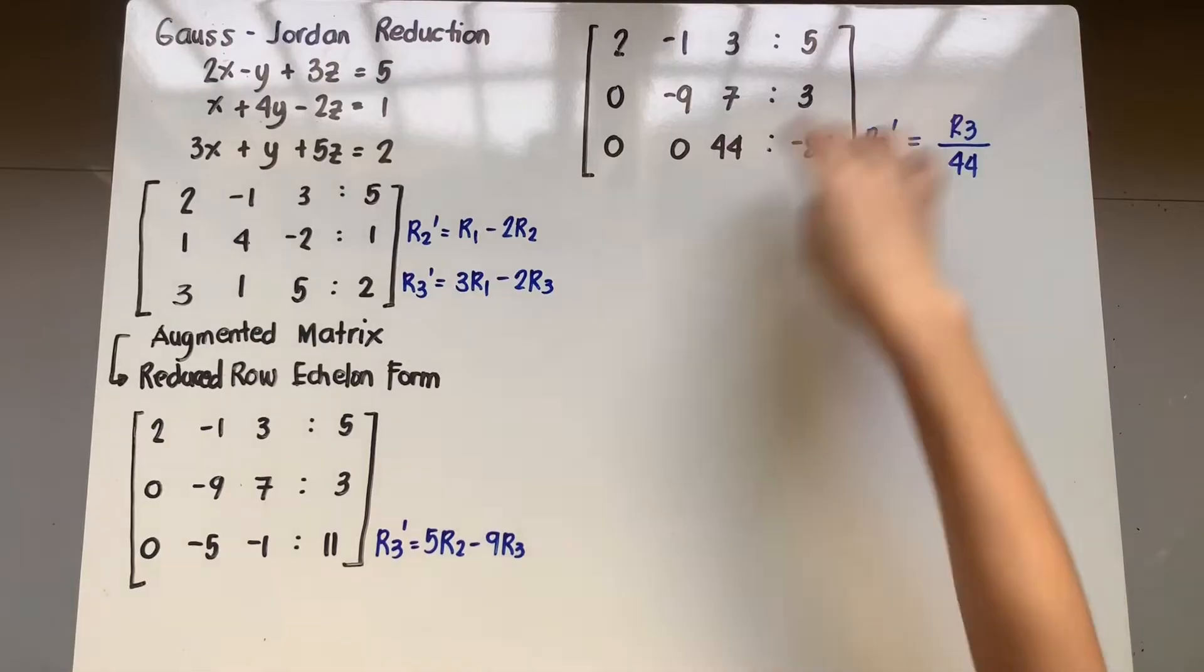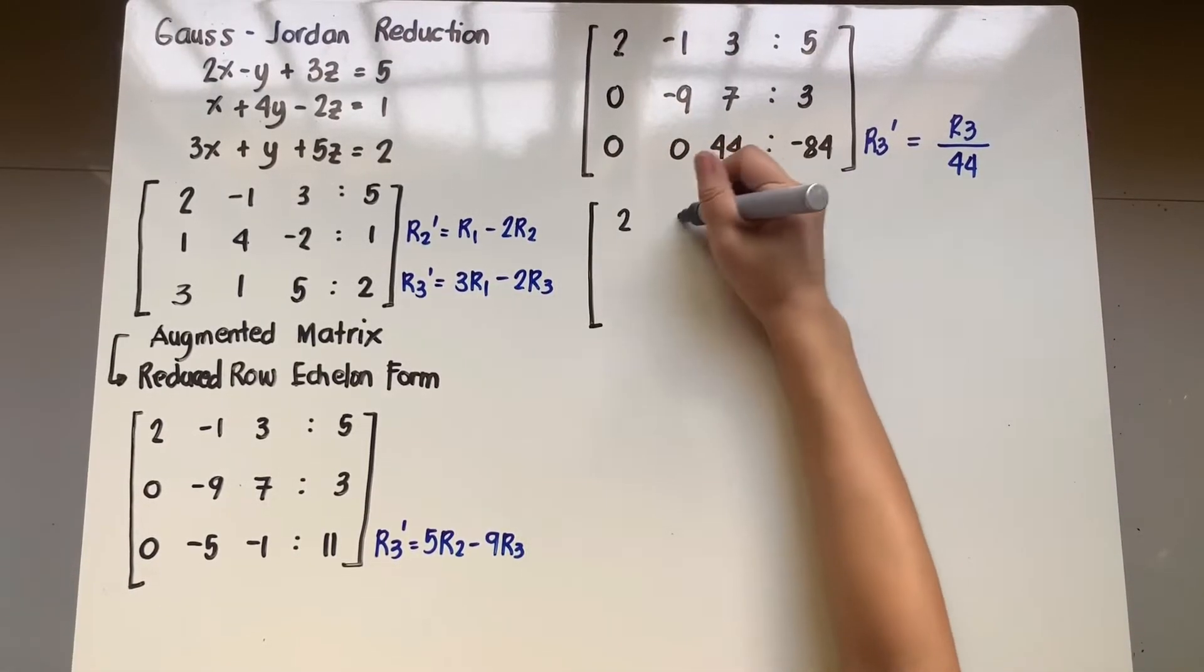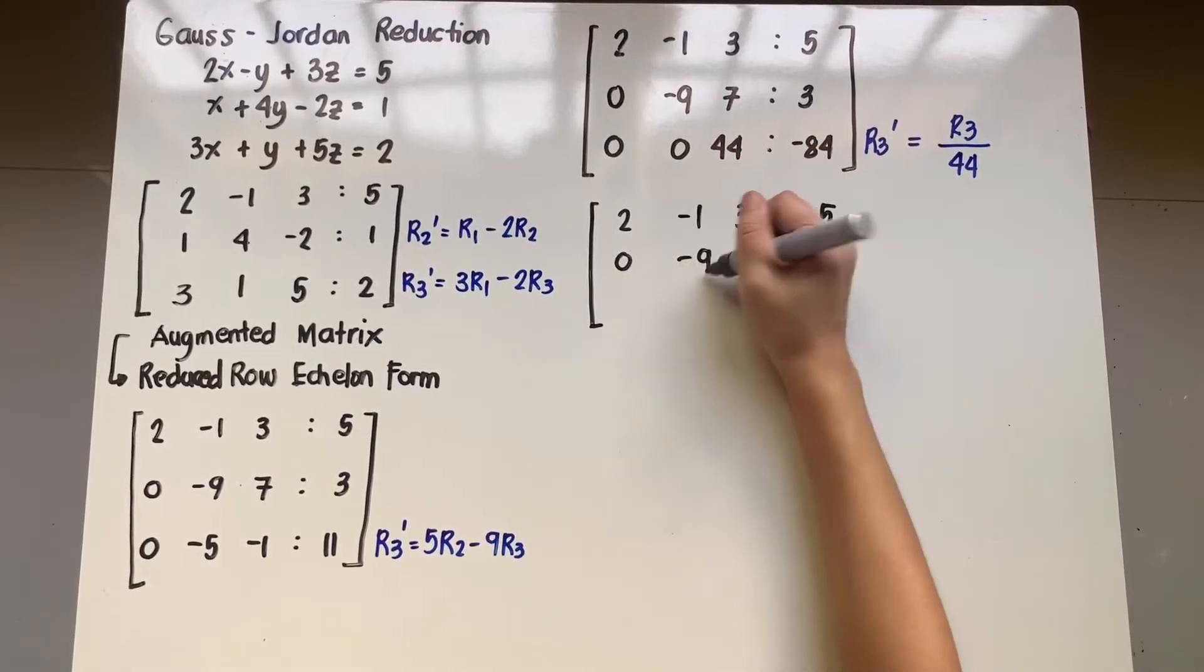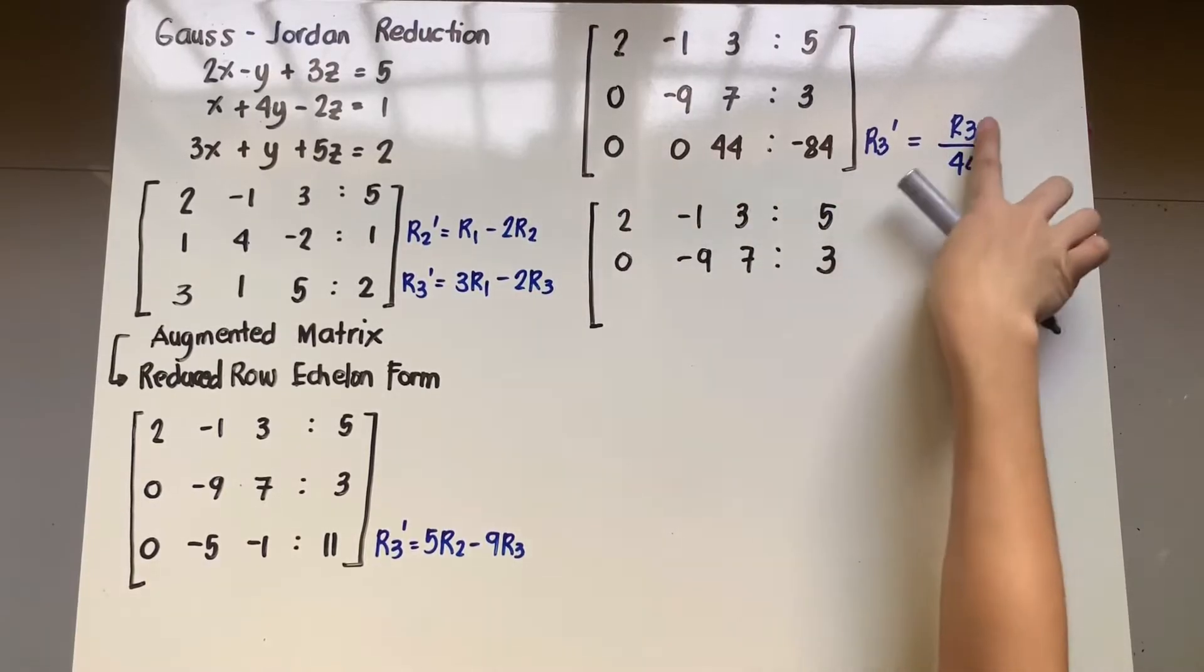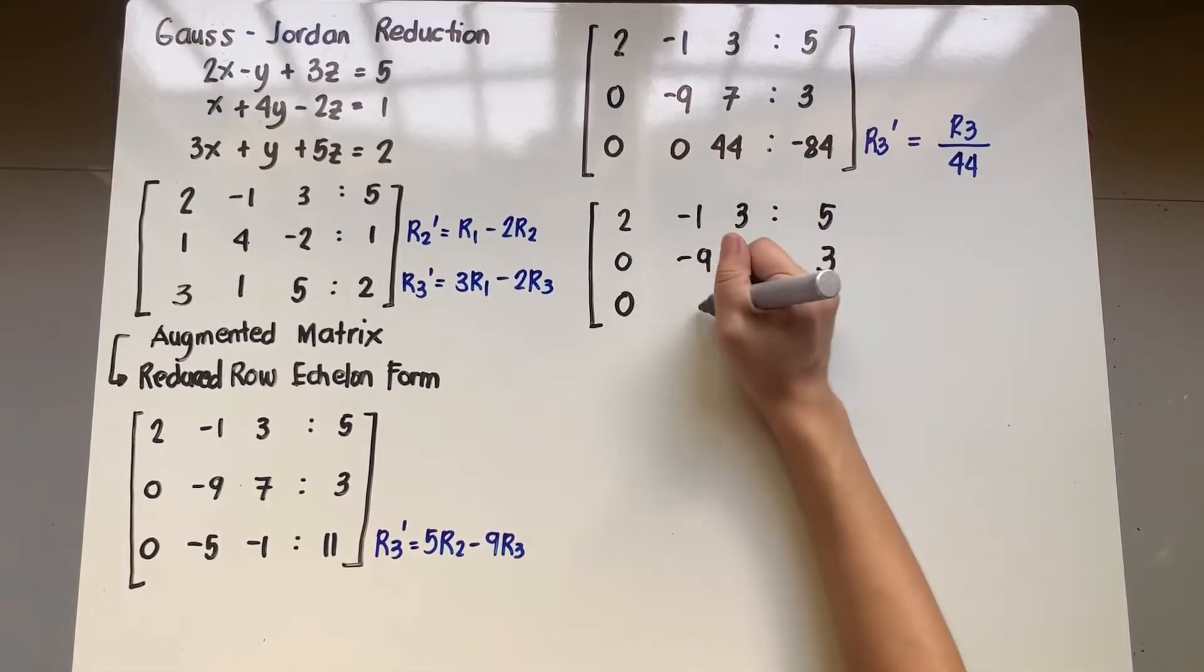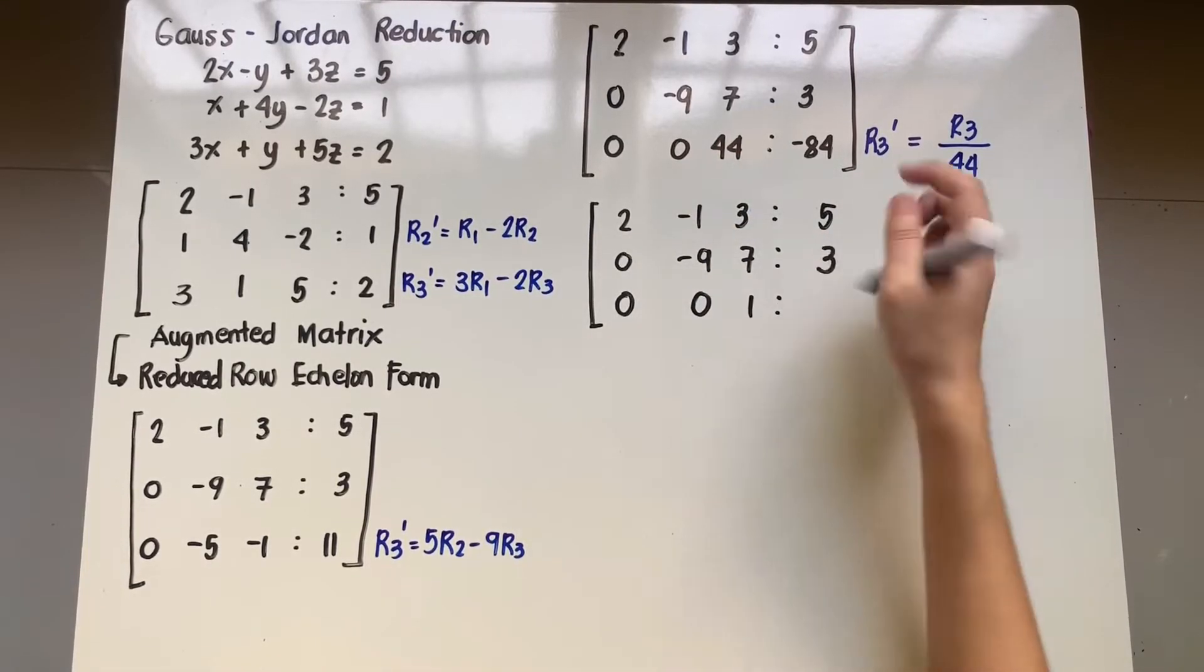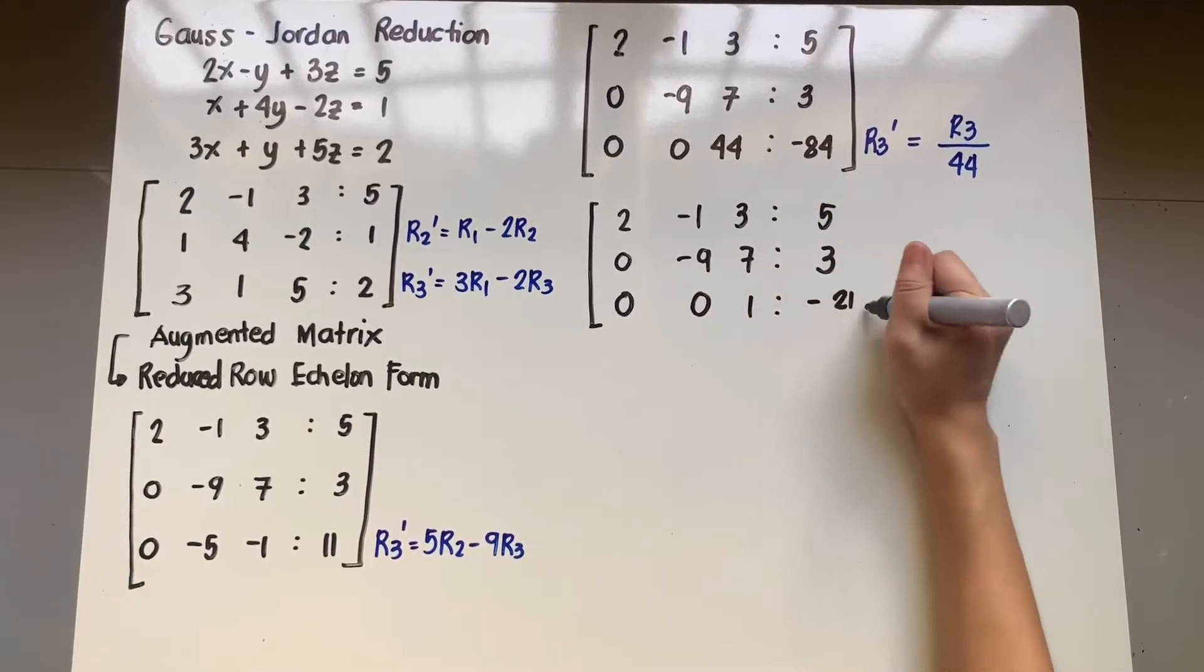So no changes on the first two rows yet. I'll copy them. You'll get 2, negative 1, 3, 5, 0, negative 9, 7, and 3. The third row will be divided by 44. So 0 divided by 44 is 0. 0 divided by 44 is 0. 44 divided by 44 is 1. And negative 84 divided by 44 is negative 21 over 11.